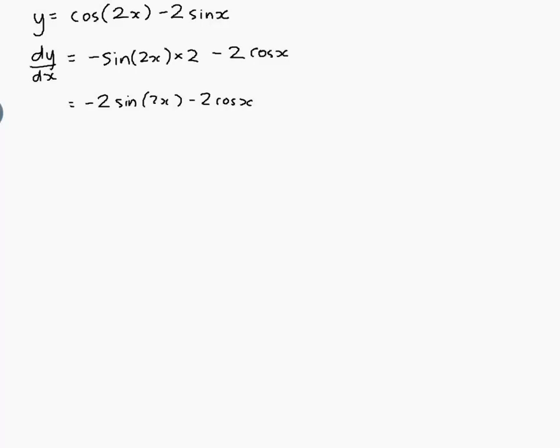So we want to solve dy/dx equals 0. So let dy/dx be equal to 0. So that means that minus 2sin(2x) minus 2cos(x) is equal to 0. Well I could divide everything by minus 2 that would make it a little bit simpler: sin(2x) plus cos(x) equals 0.